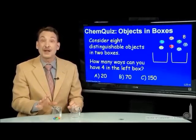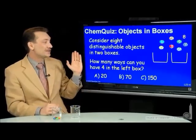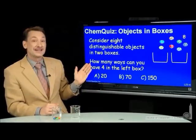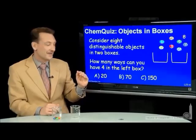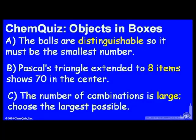Let's consider distinguishable objects in two different boxes. If I take eight balls, each distinguishable, and distribute them equally among two boxes, how many ways could you arrange four in each box? Is that 20, 70, or 150? Consider the possible explanations: A — the balls are distinguishable so it must be the smallest possible number; B — Pascal's triangle extends to eight items and shows 70 in the center; or C — the number of combinations is large, so choose the largest possible.